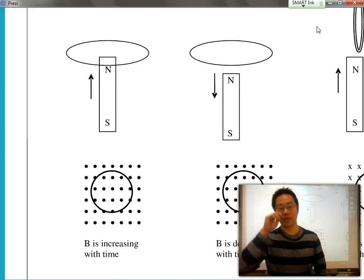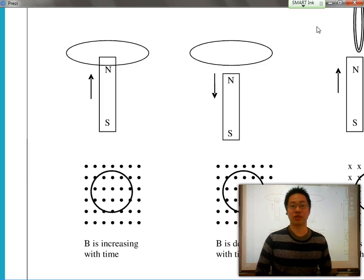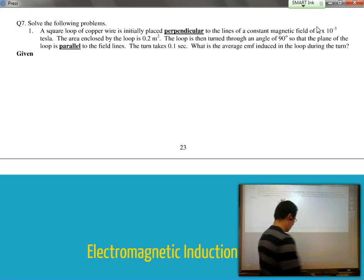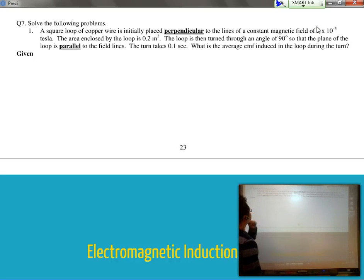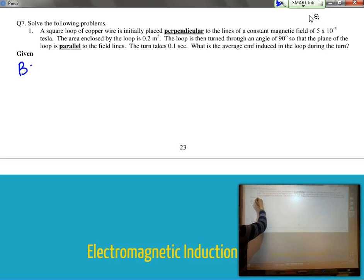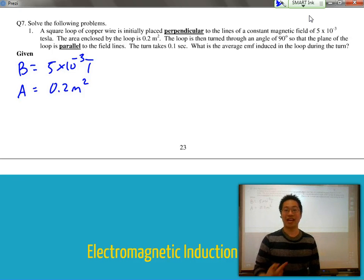So yesterday we mentioned how you have to be able to visualize what is happening with the problem in terms of using our hand rules. But let's actually take a look more carefully at the problem itself now. A square loop of copper wire is placed perpendicular to the lines of a constant magnetic field. So right now I know that B is equal to 5 times 10 to the negative third teslas. And the area enclosed within the loop is 0.2 meters squared.